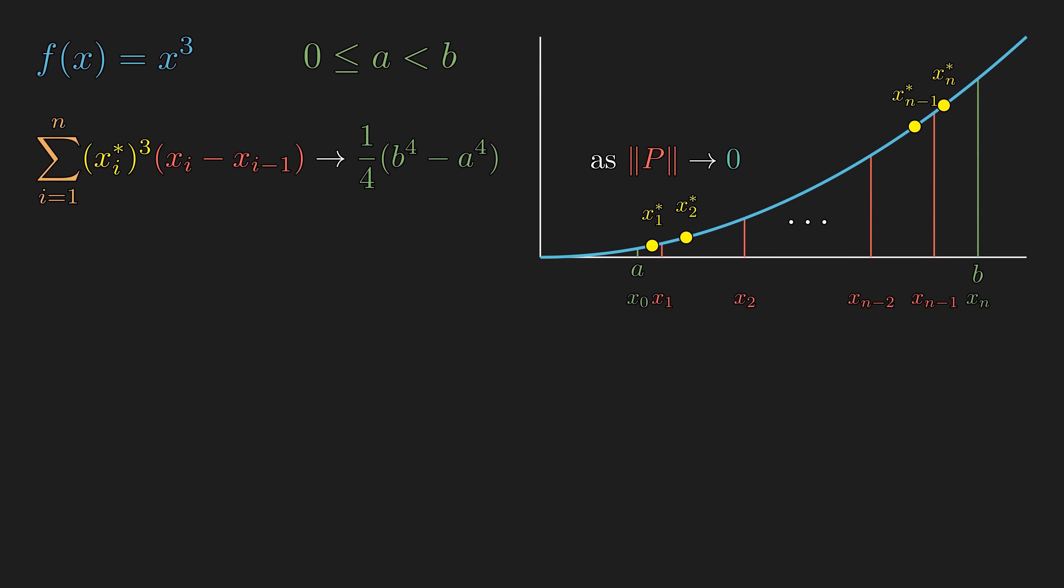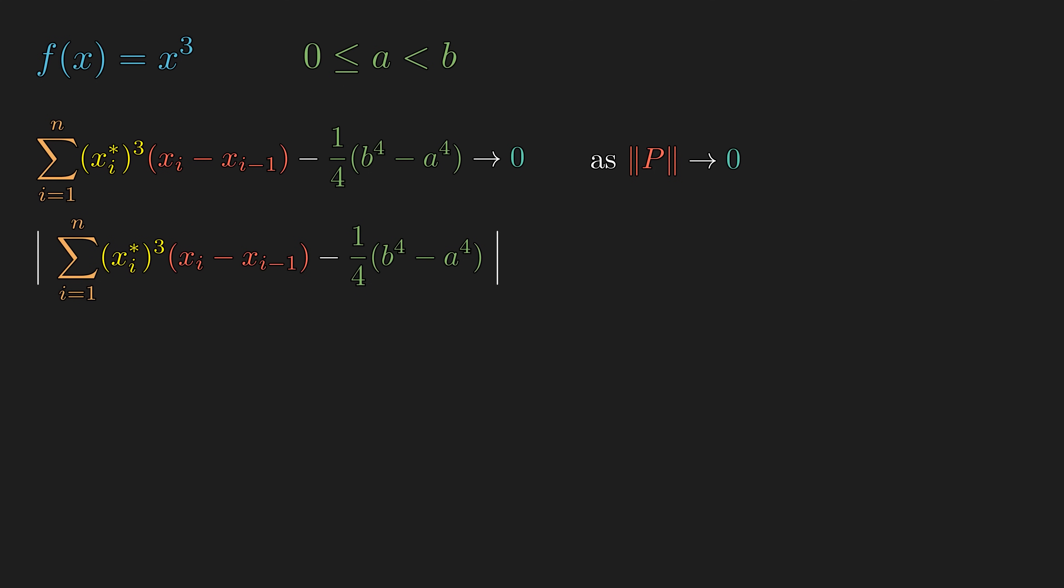The Riemann sum of the tagged partition should approach the supposed limit as the norm of the partition approaches zero. Instead of solving for this limit directly, it is easier to prove that the difference approaches zero. Now we are ready to tackle the problem. First, we will take the absolute value so that the expression is greater than or equal to zero. Next, we are going to make some substitution, so we will do some scratch work on the side. a is the leftmost partition point, and b is the rightmost partition point. This is equal to the summation of the difference of fourths of the partition points, because this is a telescoping sum, meaning every term cancels out except for the very first and the very last.